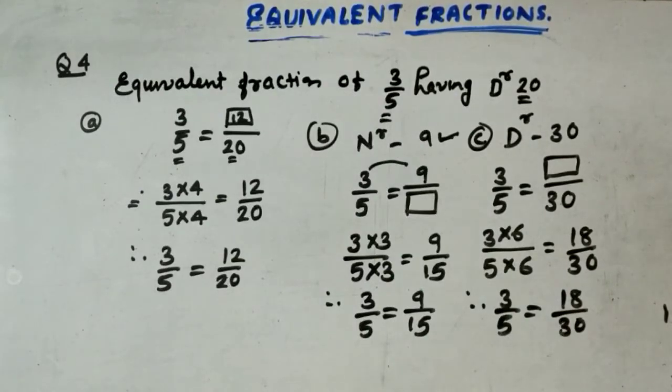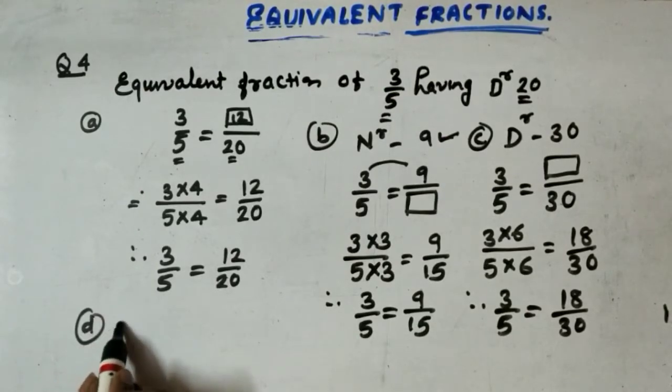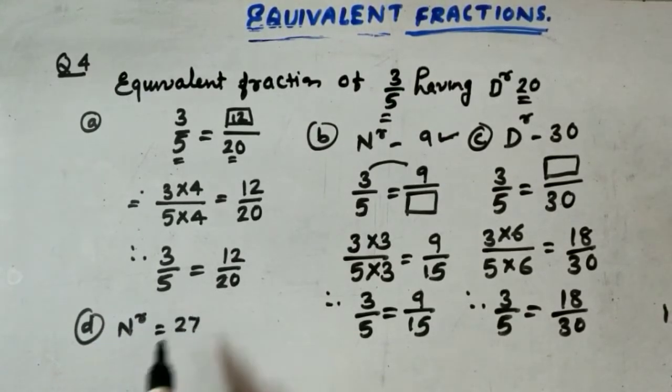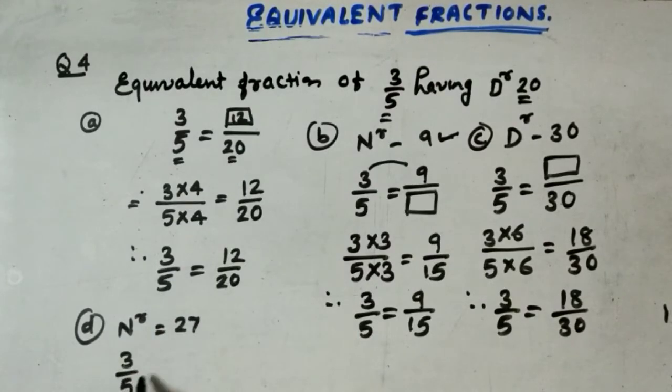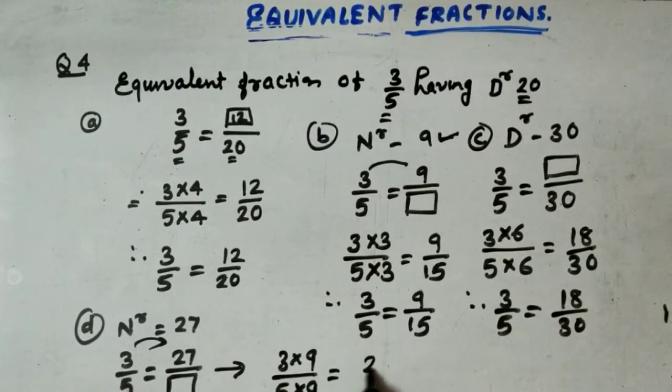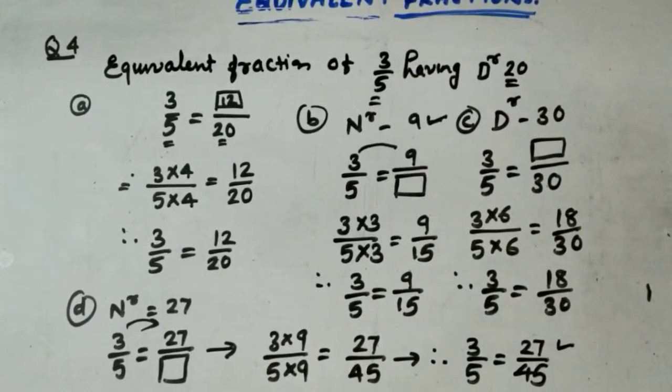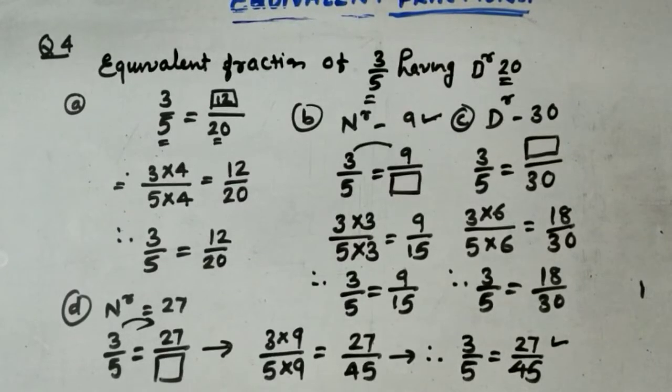Now the next question, question number D. What is in the D? Numerator 27. As usual, 3 by 5 is equal to numerator 27, denominator box. Again, see 3 how many are 27? 3 nines are 27. So 5 into 9. 3 nines are 27, 5 nines are 45. Therefore, I am writing steps in this manner since I don't have space. 3 by 5 is equal to 27 by 45. Here we got numerator 27. Hope you understood.